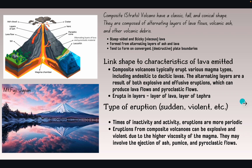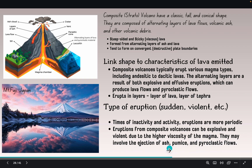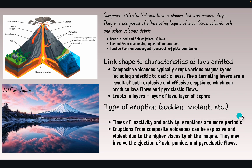Going deeper: the classical tall, conical shape is composed of alternating layers of lava flows, volcanic ash, and other volcanic debris. The lava is steep-sided and sticky — viscous, like corn syrup — and the volcano tends to form on convergent destructive plate boundaries. Eruptions are more periodic, with times of inactivity. Eruptions from composite volcanoes can be explosive and violent due to the higher viscosity of the magma, and may involve the ejection of ash, pumice, and pyroclastic flows. Mount Fuji is dormant right now, meaning it's kind of sleeping — inactive.